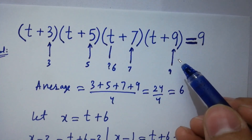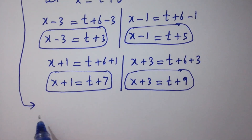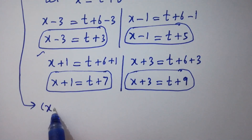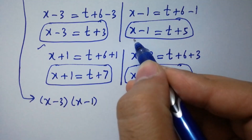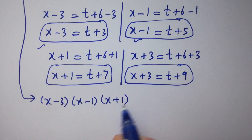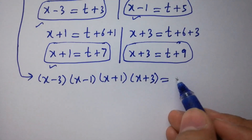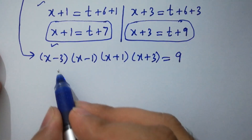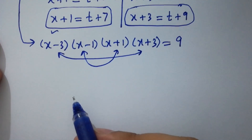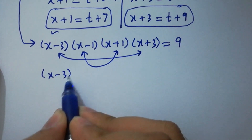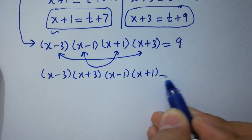This equation is the same as (x-3)(x+3) · (x-1)(x+1) = 9. By corresponding pairs, we have x-3 and x+3, and x-1 and x+1. So we can write it as (x-3)(x+3) · (x-1)(x+1) = 9.